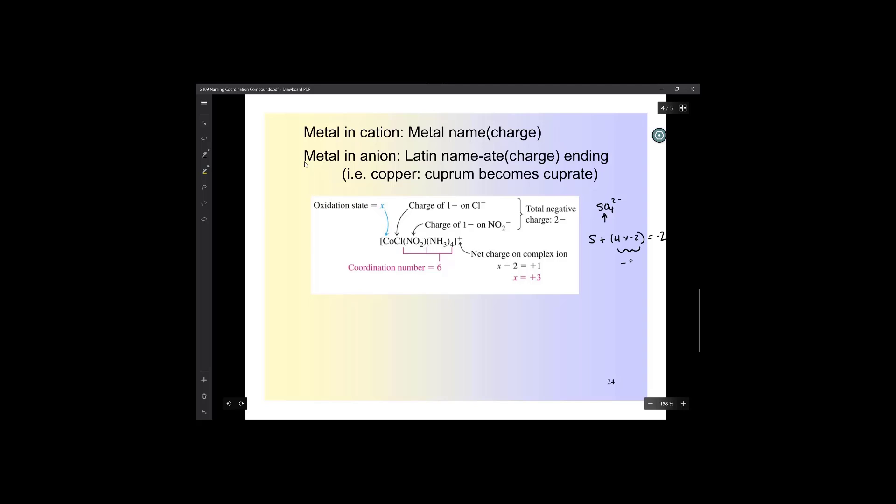And so that means in order to make this equal to -2, sulfur has to be, add 8 to both sides, you end up +6. So we're going to do the same process with this.